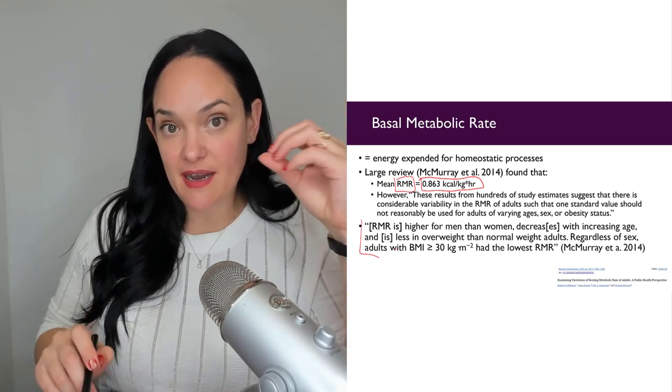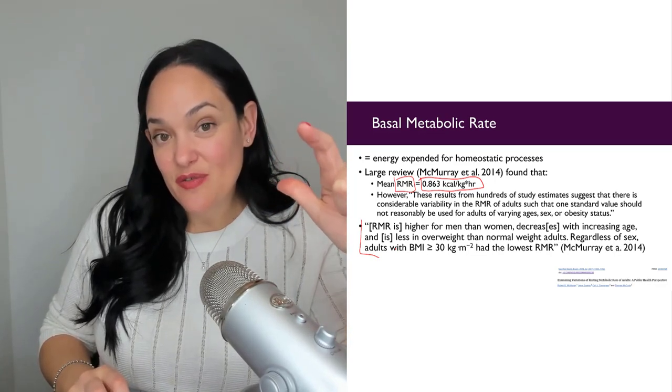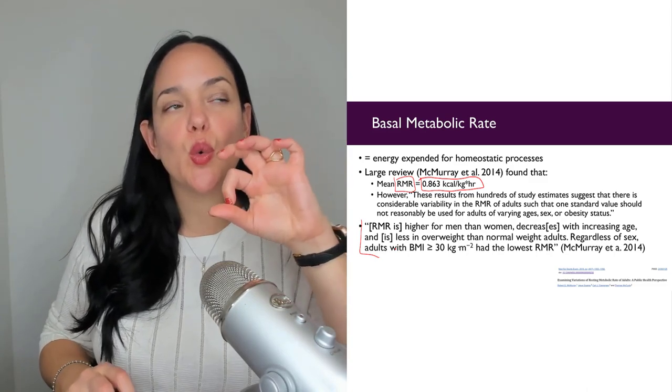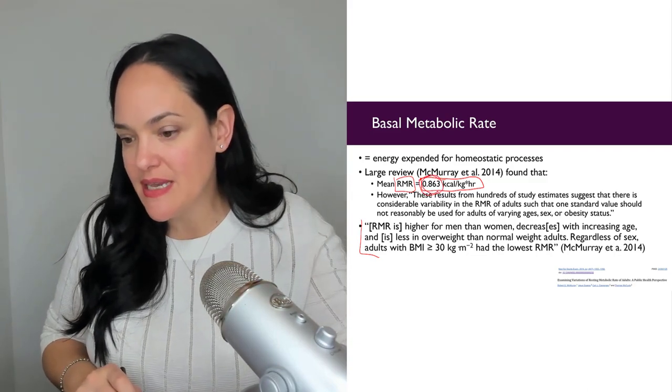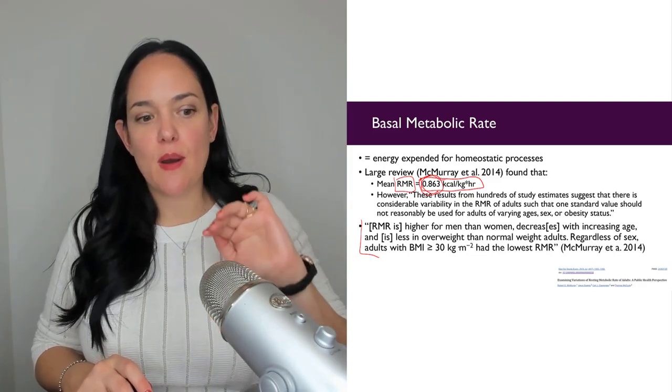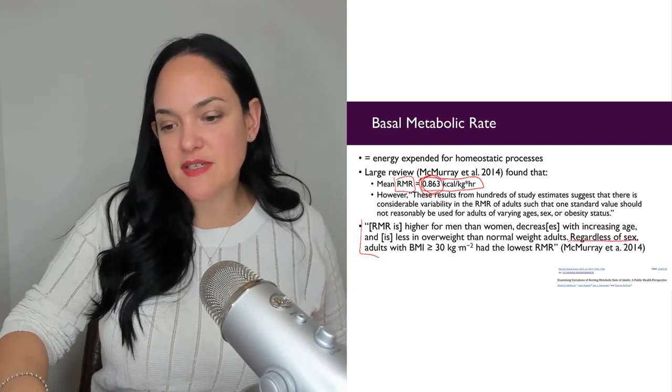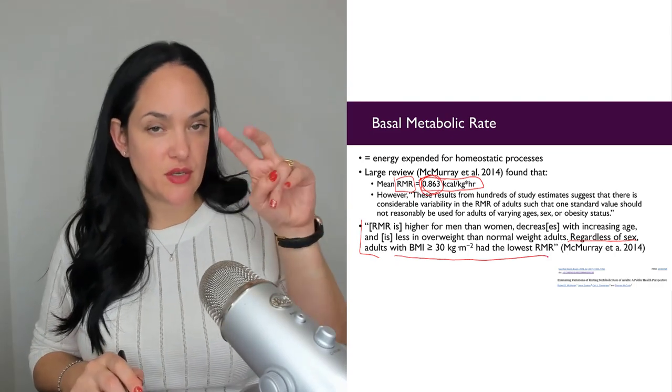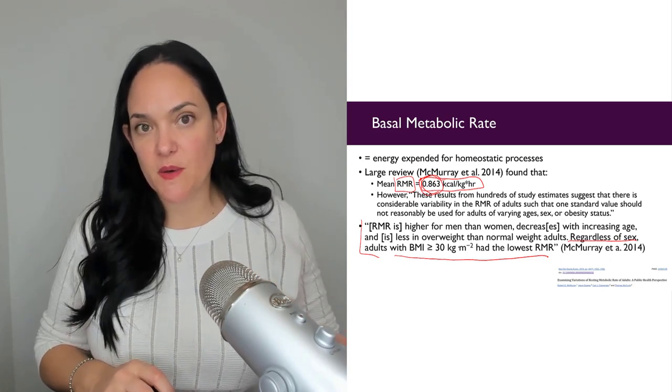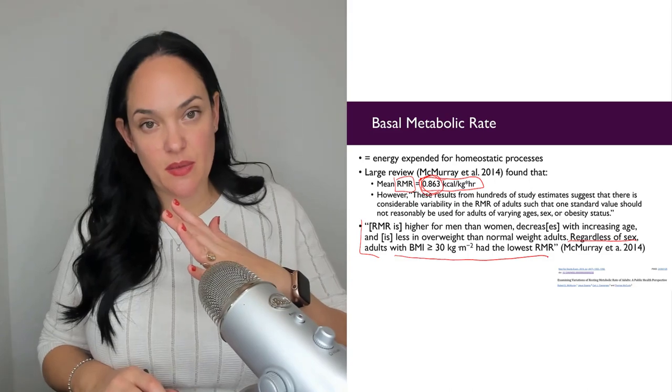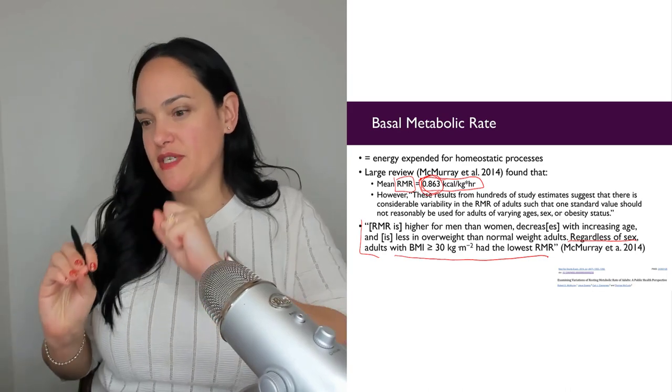So resting metabolic rate tends to be higher for men than women, it decreases with age, and individuals with overweight and obesity tend to have a lower resting metabolic rate. So this number would be lower. They're technically burning more total calories, but fewer calories per kilogram of body weight because they weigh more. And this is unfortunate. Regardless of sex, adults with a BMI of over 30, so what we might clinically call obese, had the lowest resting metabolic rate. So it doesn't just linearly increase with weight. It tends to be higher at higher weights, the absolute value tends to be higher, but the rate itself tends to be lower.